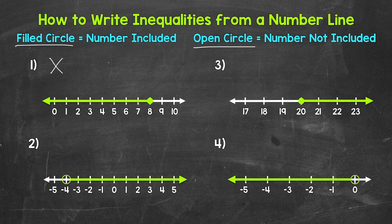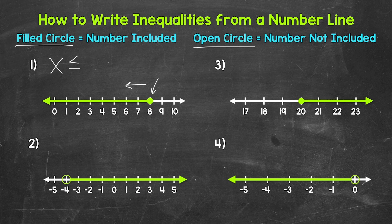So let's write our variable — we will use x. X is going to represent all of our solutions, all of the numbers that will make this inequality true. Looking at the number line again, we have a filled circle at eight, so that shows us that eight is included. And then we have an arrow pointing left, the direction of all of the numbers less than eight. So x is less than or equal to eight. That's our inequality.